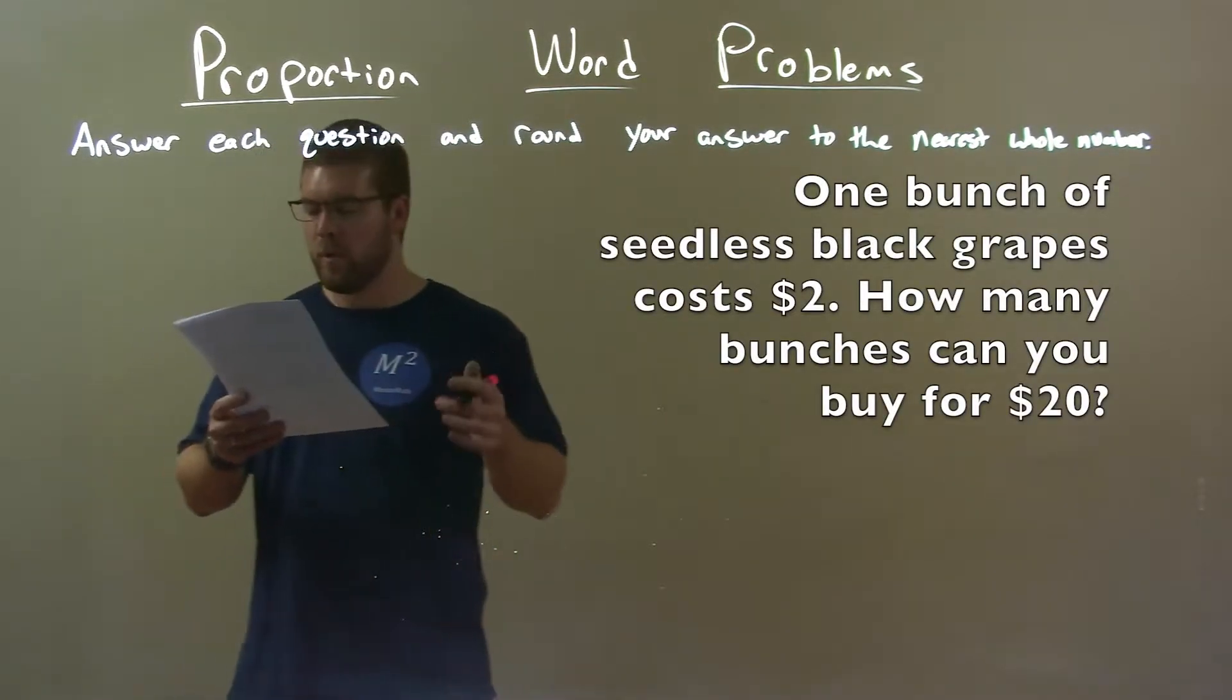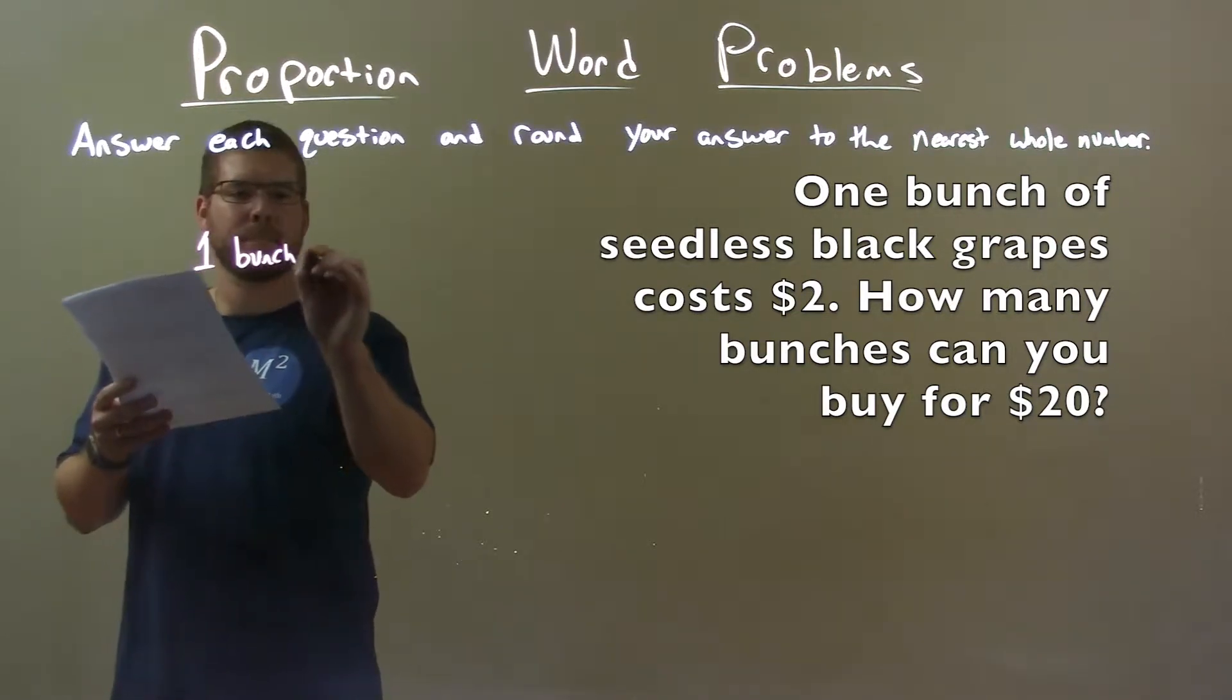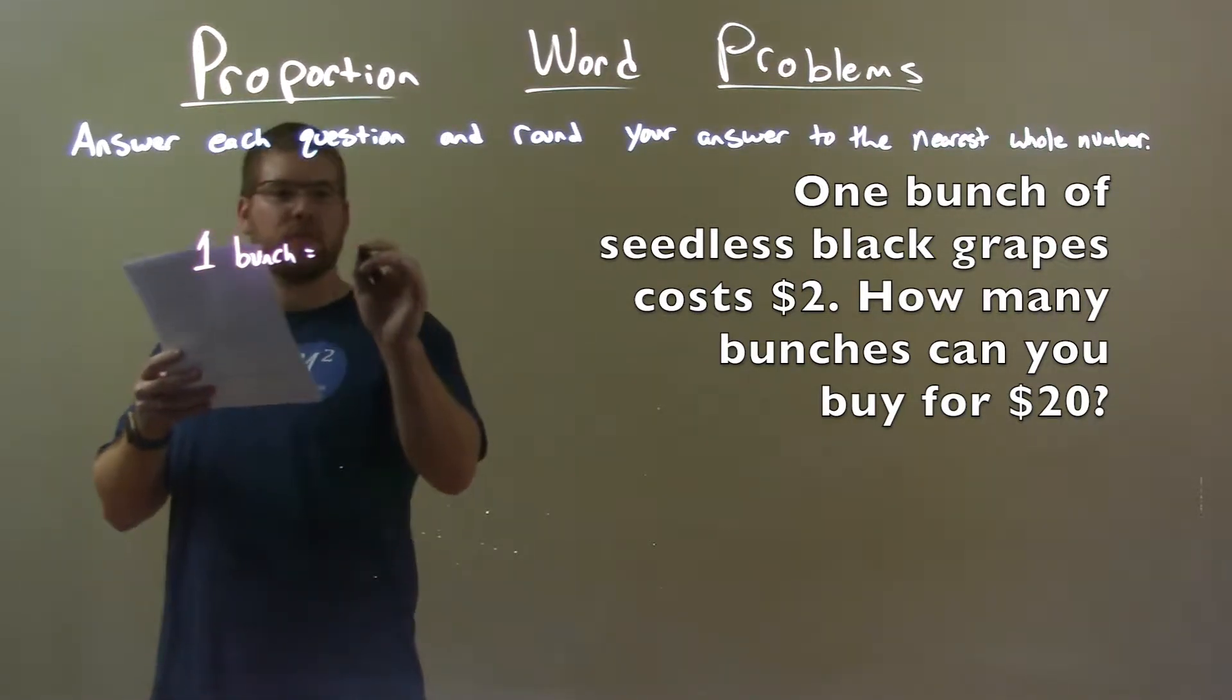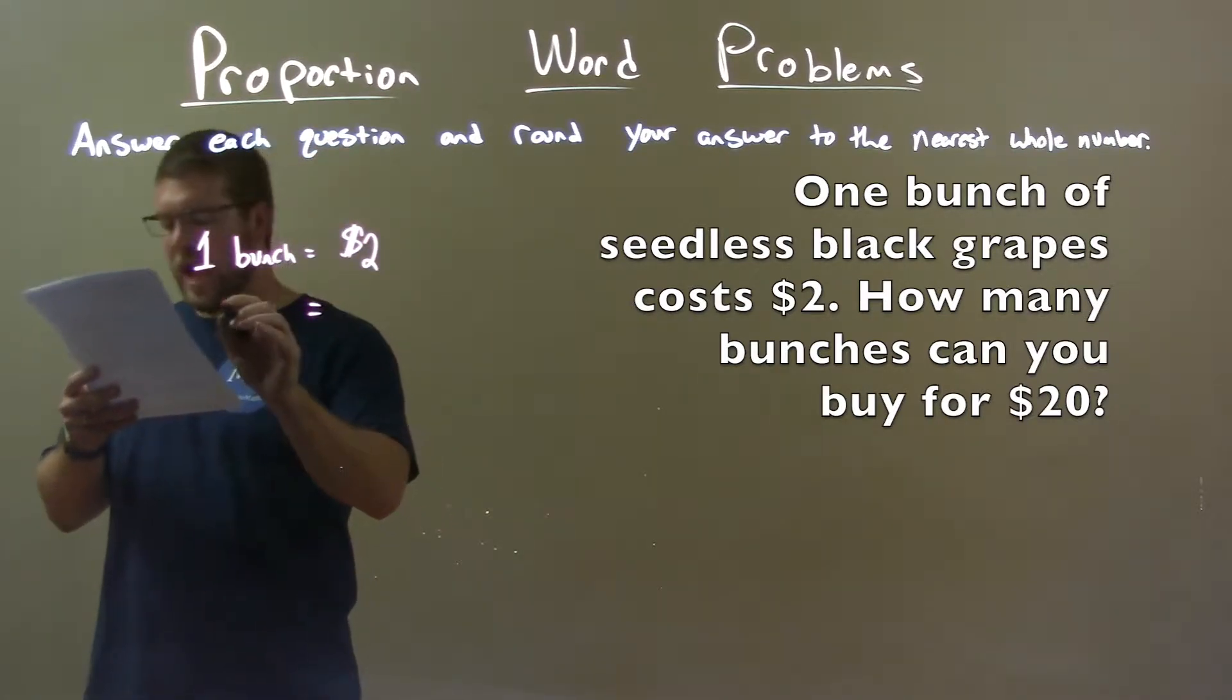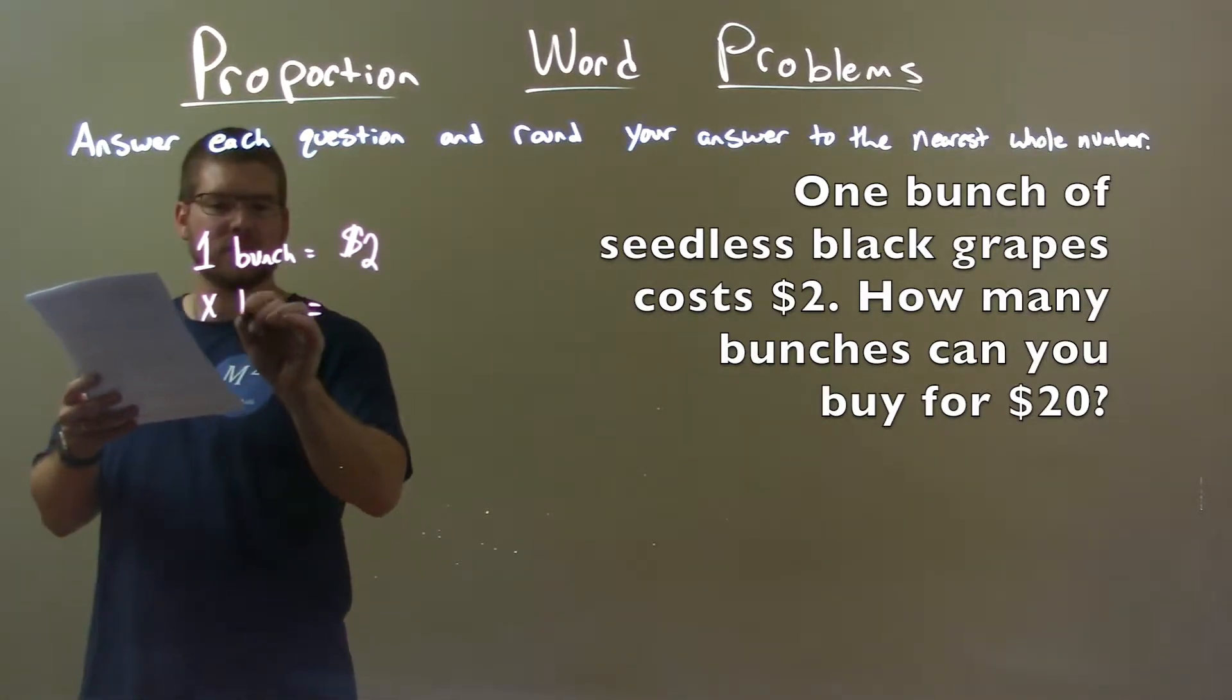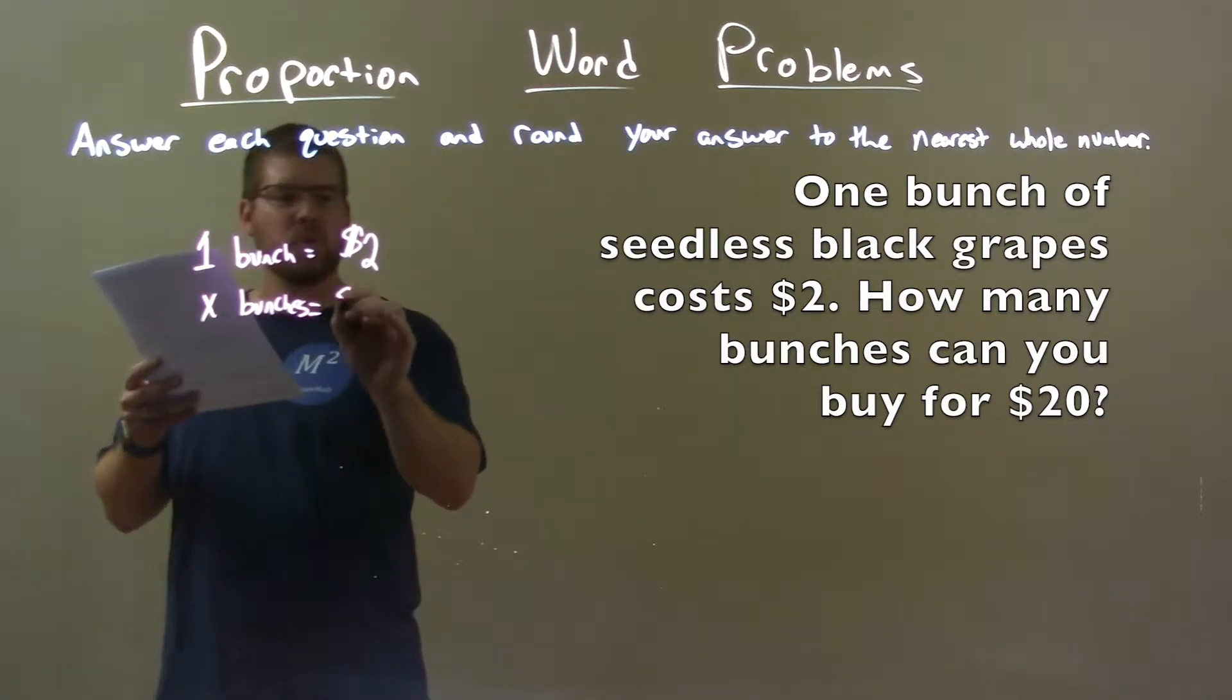So let's set up a proportion. One bunch, they tell us, costs $2. And we want to find how many bunches, so x bunches, can we get for $20.